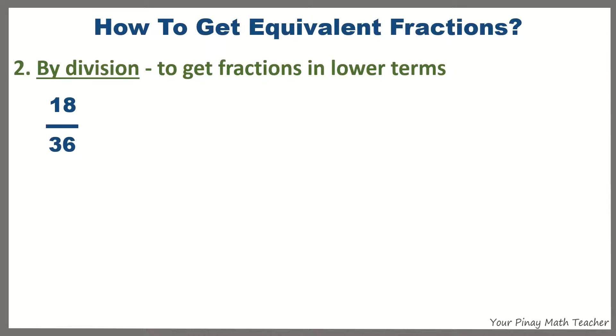For example, 18 over 36. Both of them are even. So, they are divisible by 2. So, 18 divided by 2 is 9. 36 divided by 2 is 18.